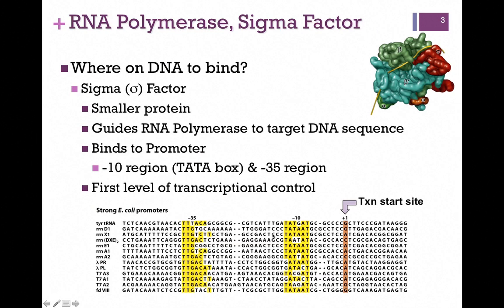The sigma factor is responsible for guiding RNA polymerase to the target DNA sequence. In other words, the sigma factor actually binds the bacterial promoter. Once the sigma factor recognizes and binds to the promoter and transcription is initiated, the sigma factor releases from the complex and only the core enzyme remains to continue and complete transcription. The released sigma factor can then bind with another core enzyme and initiate transcription on another promoter.